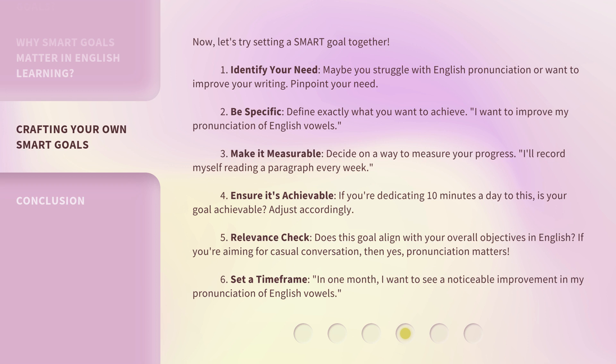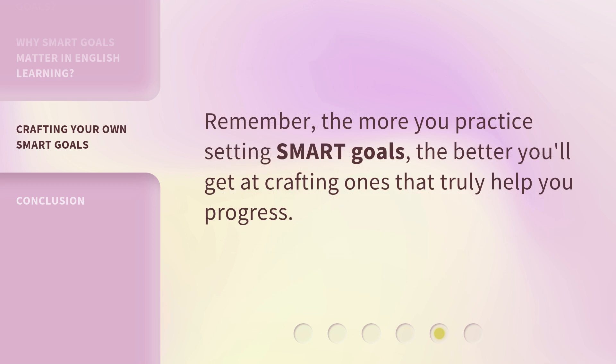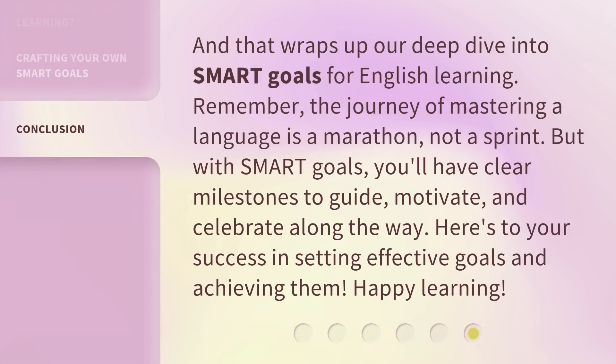5. Relevance check: does this goal align with your overall objectives in English? If you're aiming for casual conversation, then yes, pronunciation matters. 6. Set a time frame: in one month, I want to see a noticeable improvement in my pronunciation of English vowels. Remember, the more you practice setting SMART goals, the better you'll get at crafting ones that truly help you progress. And that wraps up our deep dive into SMART goals for English learning. Remember, the journey of mastering a language is a marathon, not a sprint. But with SMART goals, you'll have clear milestones to guide, motivate, and celebrate along the way. Here's to your success in setting effective goals and achieving them. Happy learning!